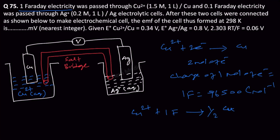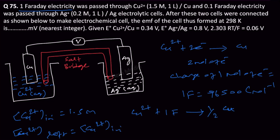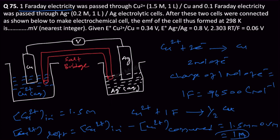So what will the new concentration of Cu²⁺ be? Initially, the concentration of Cu²⁺ is 1.5 molar before electricity is passed. After electricity is passed, Cu²⁺ remaining equals Cu²⁺ initial minus Cu²⁺ consumed. Here, 0.5 molar is consumed. So 1.5 molar minus 0.5 molar equals 1 molar. That is the new concentration of Cu²⁺.